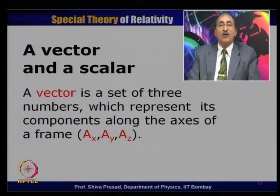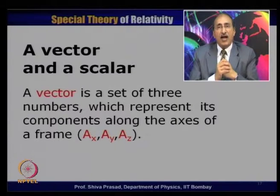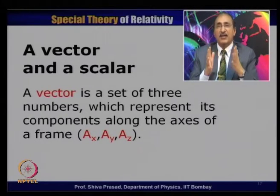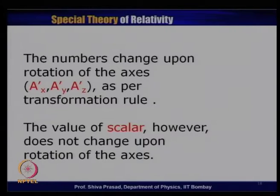In a nutshell: if I have a set of three numbers representing a vector, once I change my x, y, z axes to x', y', z' by rotation, they will always follow the same transformation equation. On the other hand, if a quantity is a scalar, it will always remain the same, irrespective of which set of axes I chose to describe my vectors.